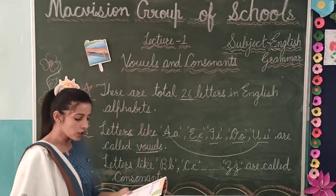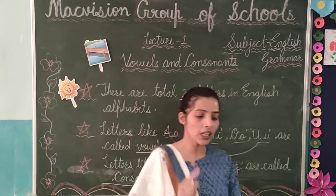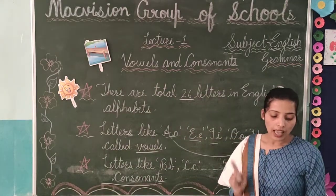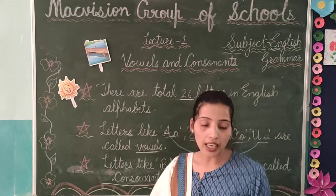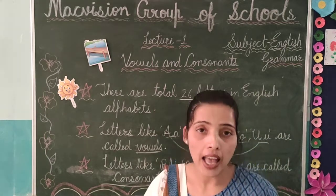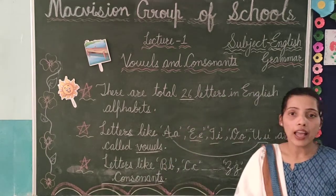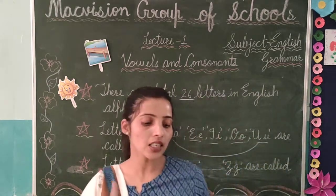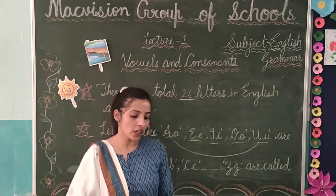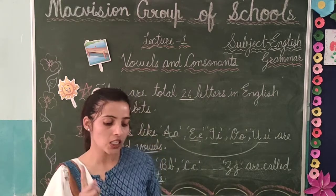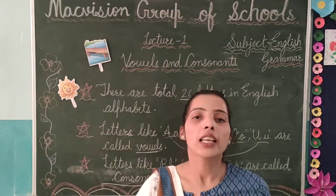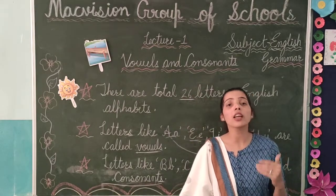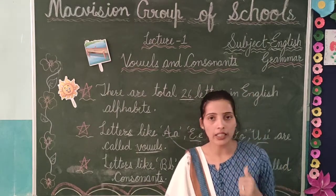Which letters are consonants? B, C, D, F, G, H, J, K, L, M, N, P, Q, R, S, T, V, W, X, Y, Z. These are all the consonants. Clear?